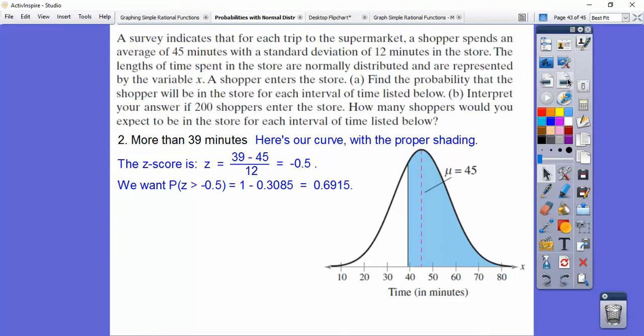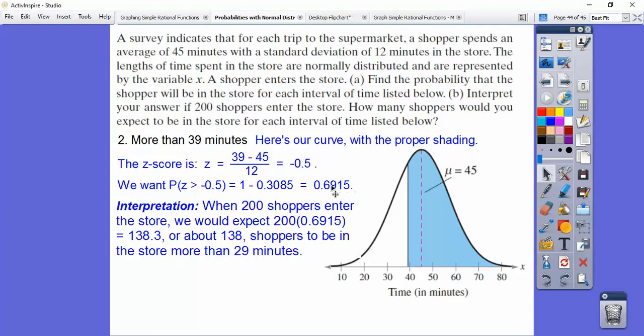And we get this little area right here. I should have shaded that. But this area right here is 0.3085. So this area is 1 minus 0.3085. So it's about 69.15% that are in the store for more than 39 minutes. Okay, now what if 200 shoppers went in there? We multiply 200 times that, and we get about 138 shoppers will be in the store more than 29 minutes. Maybe a little bit more, maybe a little bit less, but that's a good approximation.